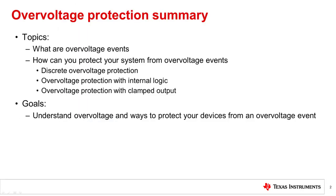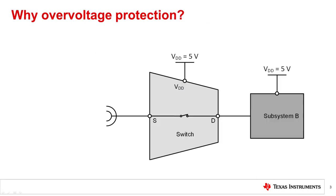We will start by identifying an overvoltage event and then discuss how you can protect your system from overvoltage events. Any voltage on a signal pin that rises above the maximum ratings of a switch is considered an overvoltage event.